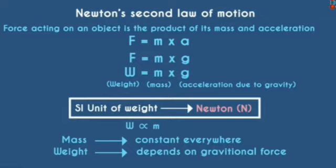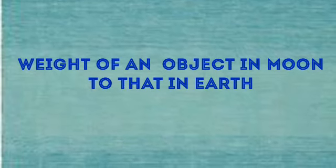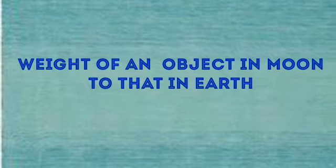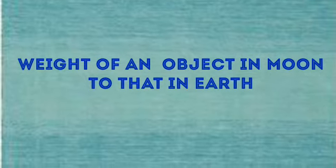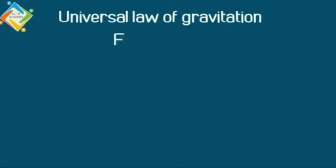Now, let us understand how much this weight will be different for an object when it is placed on the surface of Earth and Moon. So, we will be getting the relationship between weight of an object in Earth to that in Moon. According to Universal Law of Gravitation, F equals GMm by R square.